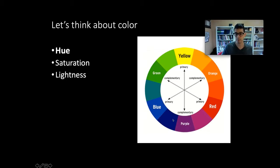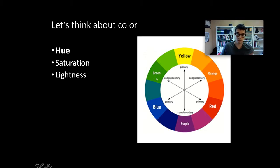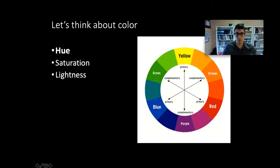We can understand hue using the basic color wheel—a rainbow of colors arranged in a circle. Colors across from each other on the circle are called complementary colors: yellow and purple, blue and orange, green and red. When using hues, we want to keep the same hue for the same kind of data, and avoid using a ton of different colors for the same information. If we're portraying crime rates across categories, we should stick with different kinds of greens or different kinds of blues.